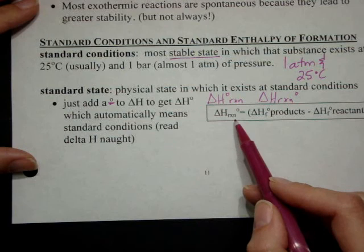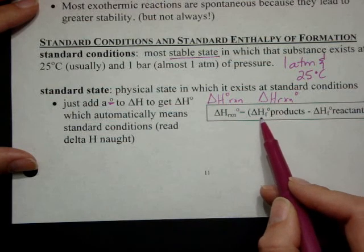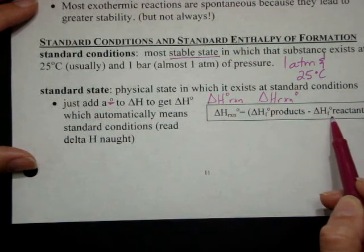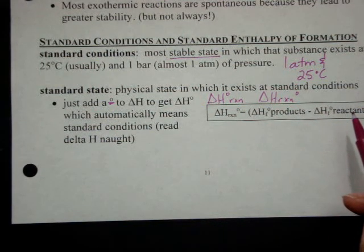So in order to get the enthalpy of a reaction, you're going to take the enthalpy of the reaction is equal to the change in enthalpy of the formation for the products minus the change in enthalpy of formation for the reactants, which is very similar to what we had been doing.